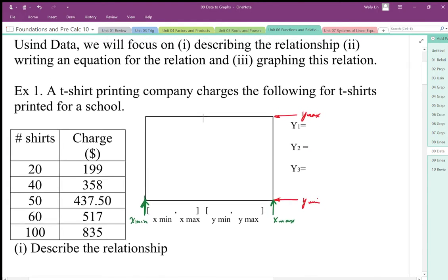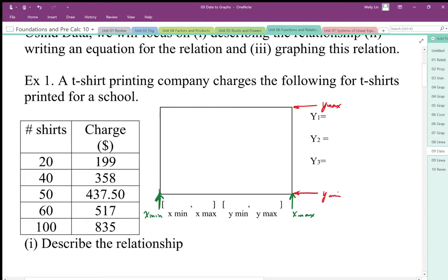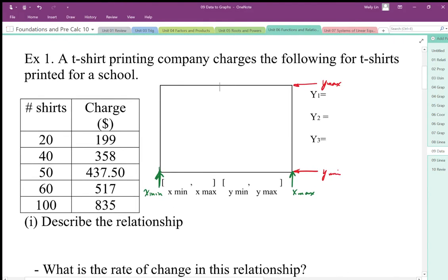So let's graph these. So this is the relationship. A t-shirt printing company charges the following for t-shirts printed for school, and again all these ones we're just going to focus on linear relationships, we should expect a straight line relationship. So this is what the relationship looks like: for 20 shirts we charge $199, for 40 shirts we charge $358, 50 shirts $437.50, etc.